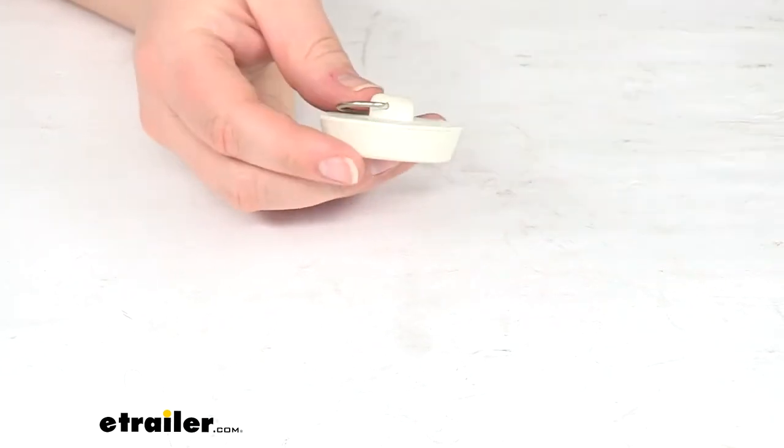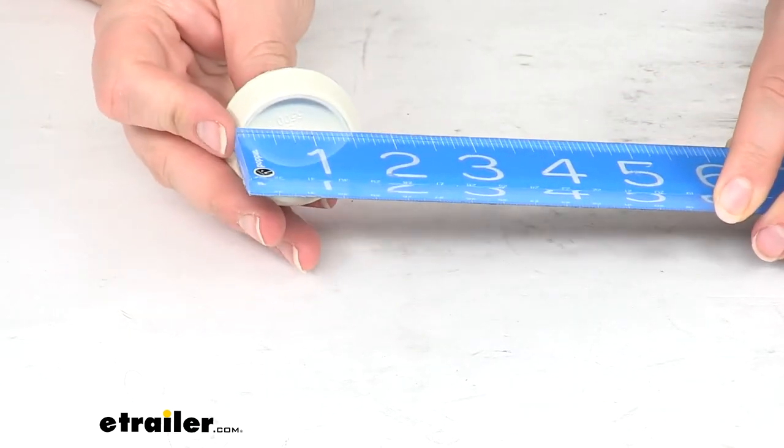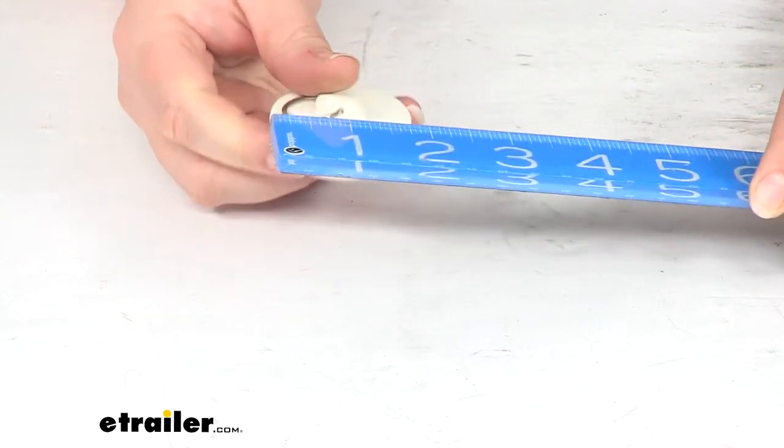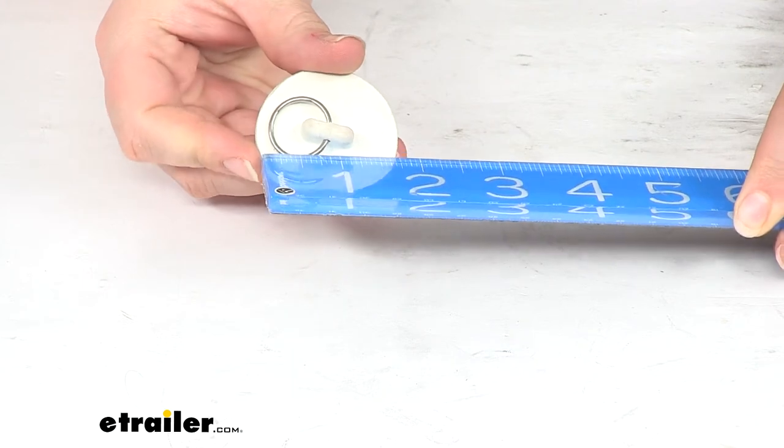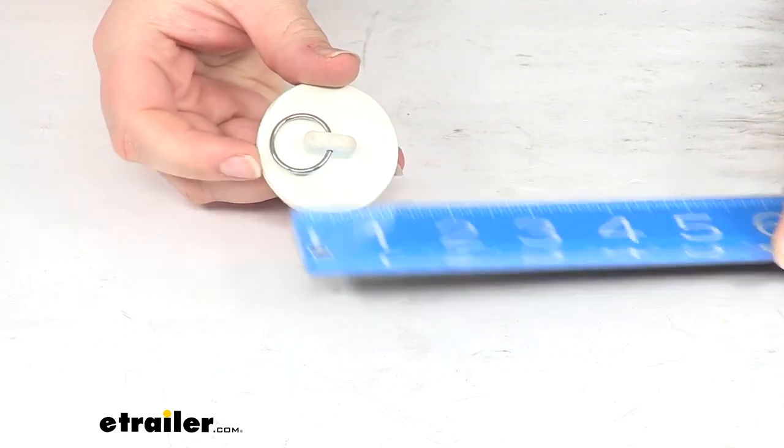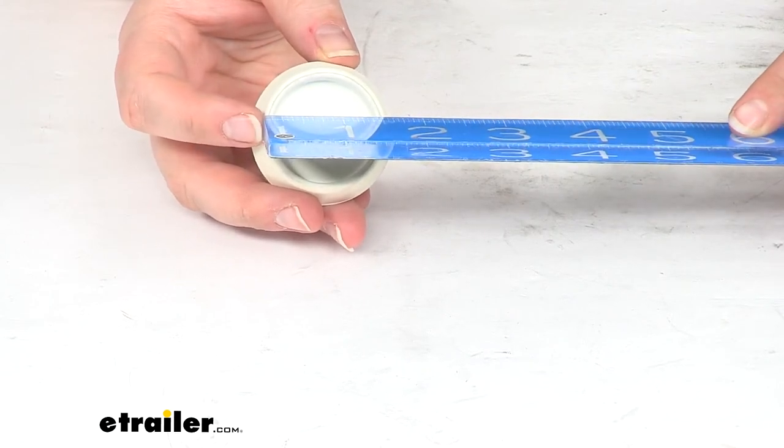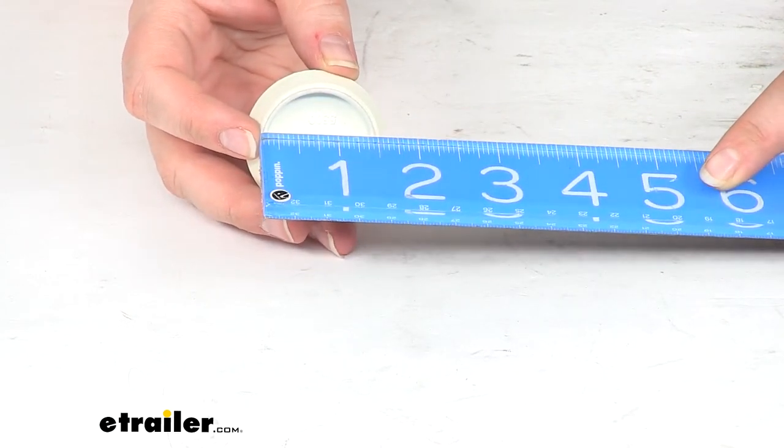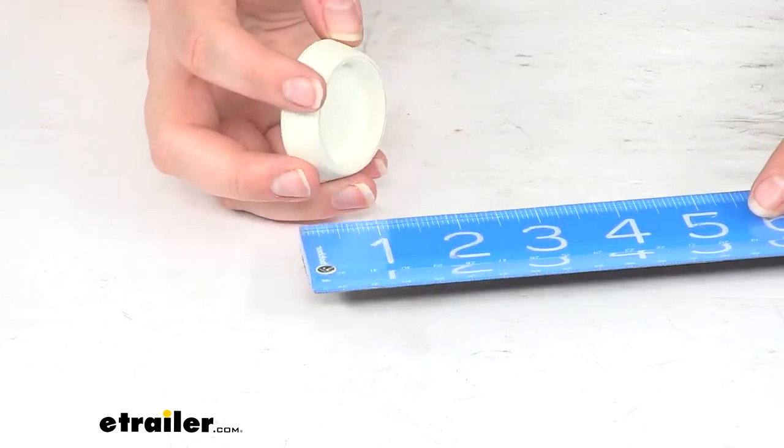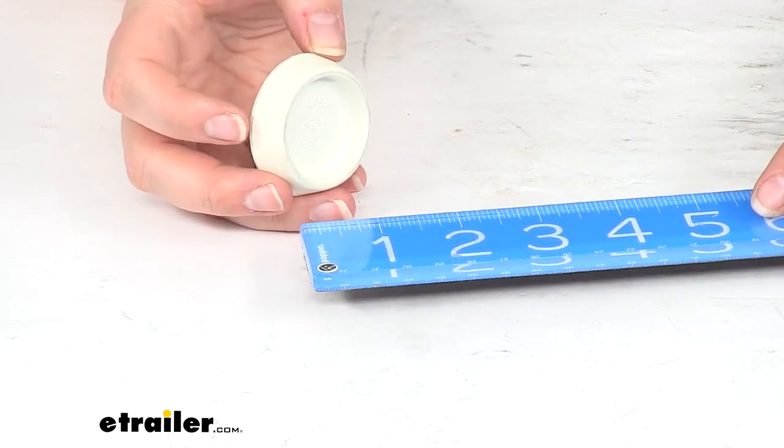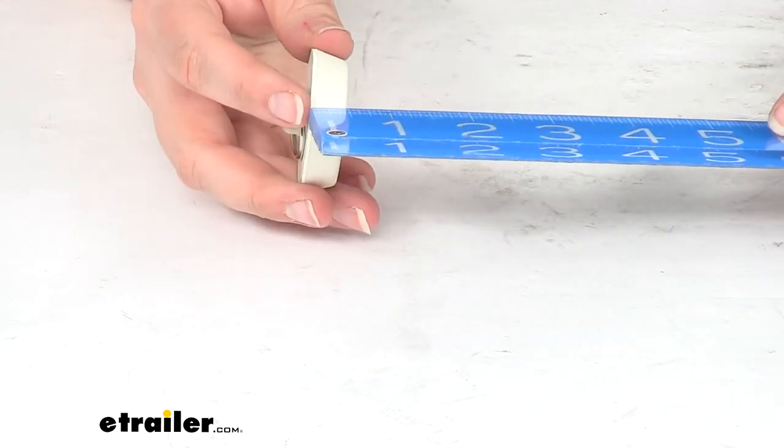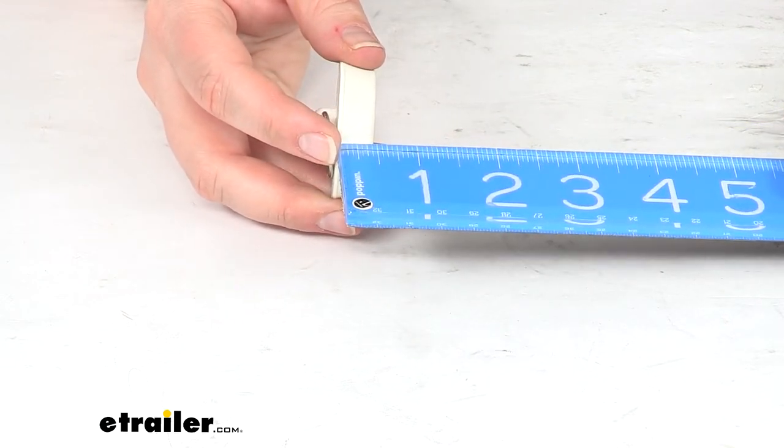It's going to measure about 1 and 5 eighths inches in diameter. That's going from the topmost edge, so it does kind of taper out. The narrowest portion is about 1 and a half inches, so about an eighth inch difference between the top and bottom diameters there. And then it's about a half inch thick.